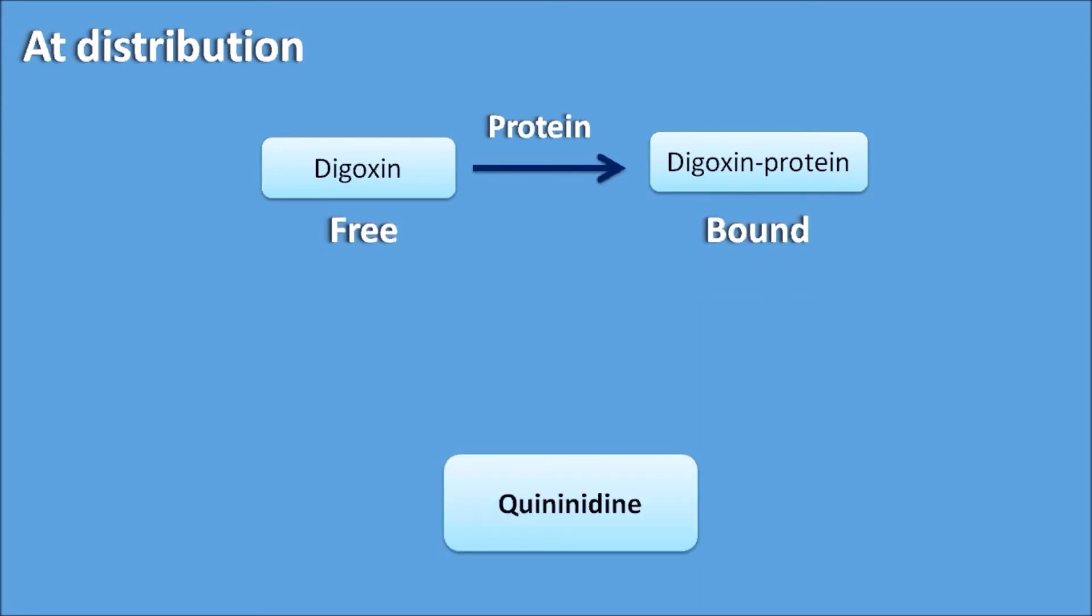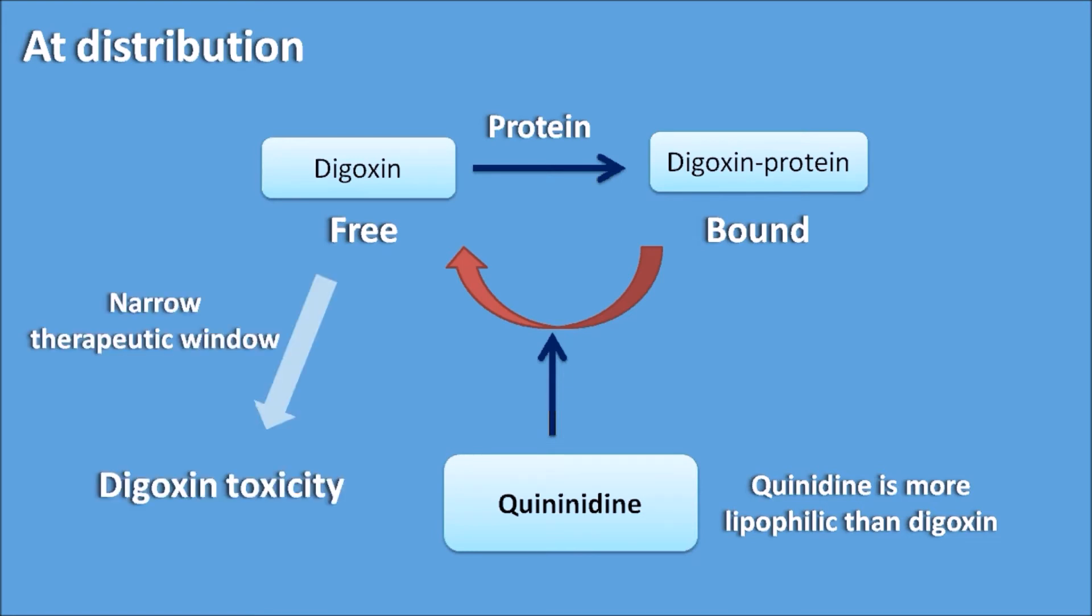Now let us see what happens with digoxin. Digoxin again forming a complex with the protein, so it exists in two forms: free form and bound form. So drugs like quinidine which is more lipophilic than digoxin can cause the protein displacement, thereby decreases the binding of digoxin to the protein and increases the free concentration of digoxin in the plasma. As digoxin has narrow therapeutic window, this interaction can increase the digoxin toxicity. So this is one of the significant drug interactions at the distribution level.